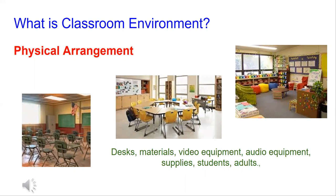If you look at the examples I have up here, I have three examples of classroom arrangement. The first one on the left is a traditional arrangement — just student desks all in a row facing the front of the classroom, with a podium and some chalkboards at the front. What type of teaching do you think is going to be happening in this setting? If you guessed lecture, then you were correct, because this is definitely the type of setting where students sit and listen to the teacher.